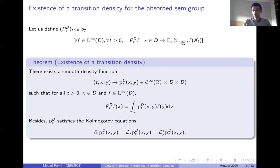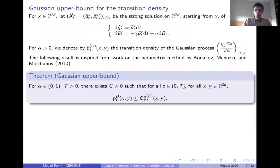Let us study the absorbed semigroup related to the Langevin process trapped in D. Again, tau here is the first exit time from D. So we can define this semigroup, and we obtain the existence of a smooth density function which satisfies the backward and forward Kolmogorov equations.